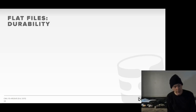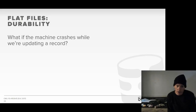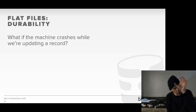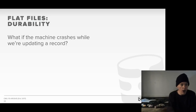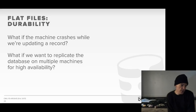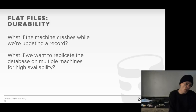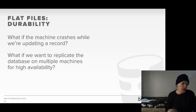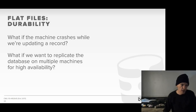The last issue is durability — how do we make sure all changes to our database are durable? If we're updating a record and pull the plug on the machine, how do we ensure the database isn't corrupted? If we update two records and crash before completing the second, how do we roll back the first? And if we want to replicate our database across multiple machines for high availability, maybe we use a distributed file system — but then we have the same problem of two programs on different nodes trying to update the same files. How do we make sure that runs quickly and correctly?